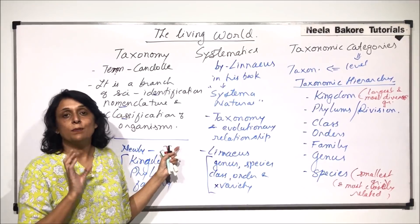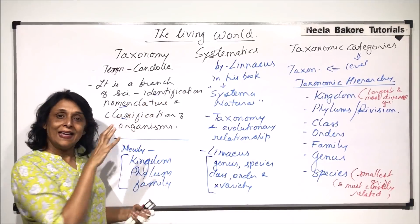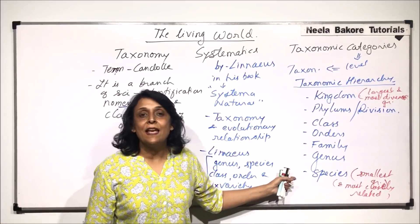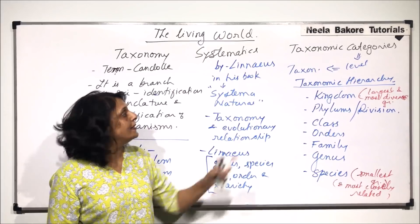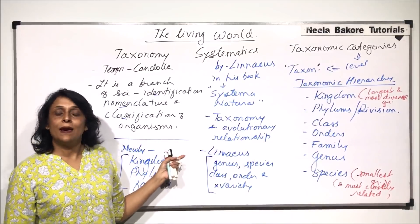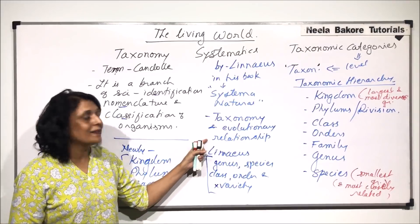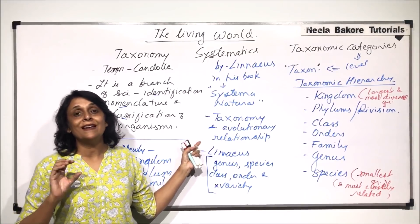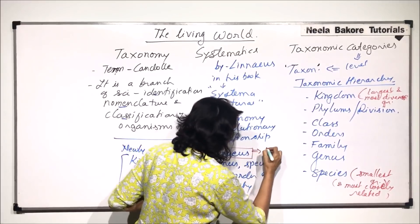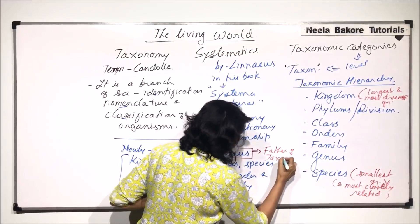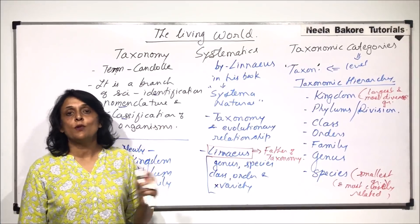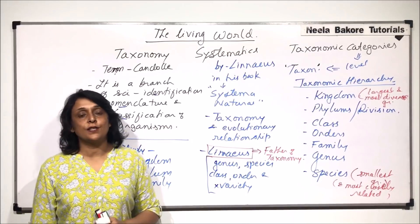Taxonomy is the branch which helps us in identification, naming, and classifying organisms. We classify them into these seven categories, and the technical term for a category is taxon. Systematics is taxonomy plus the relationship amongst organisms of a particular category or taxon. Linnaeus is also known as the father of taxonomy. These terms are very important when studying classification or diversity in living organisms.